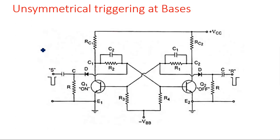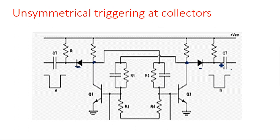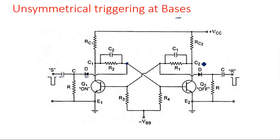For unsymmetrical triggering at the bases, the same circuit is redrawn connecting at the base of each transistor. The same configuration applies: diode, capacitance, and resistance. However, the resistor's other end is now connected to ground, whereas for collector triggering it was connected to VCC. This is the unsymmetrical triggering configuration at the bases.